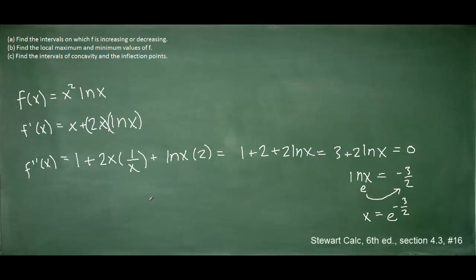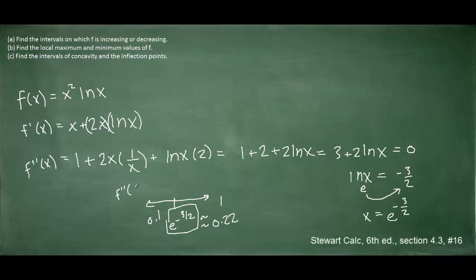Let's plot that value on a number line. On a calculator, e raised to the negative 3 halves is approximately 0.22. So when we test values to plug into the second derivative, we'll use 0.1 and 1. In this number line analysis, you're plugging your test values into the second derivative. We find that f double prime of 0.1 gives a negative answer and f double prime of 1 gives a positive answer.